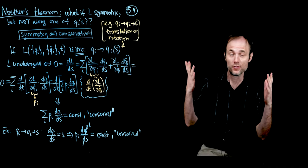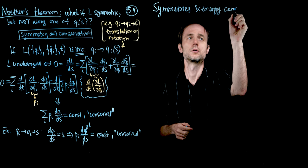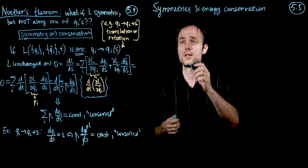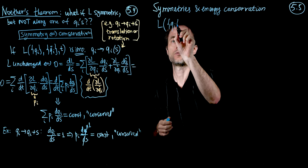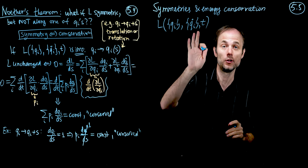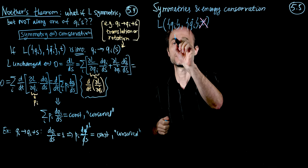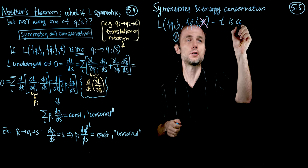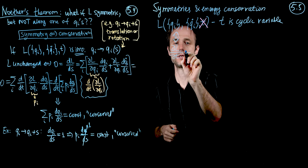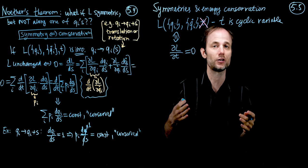Welcome to part 5 of lecture 5 — we're going to talk about symmetries and energy conservation. Suppose we're dealing with a Lagrangian where time is the cyclic variable: L depends on the generalized coordinates and velocities, but does not depend on time explicitly. In other words, time is a cyclic variable, meaning ∂L/∂t = 0. If that is the case, let's try and show that something like energy is conserved.